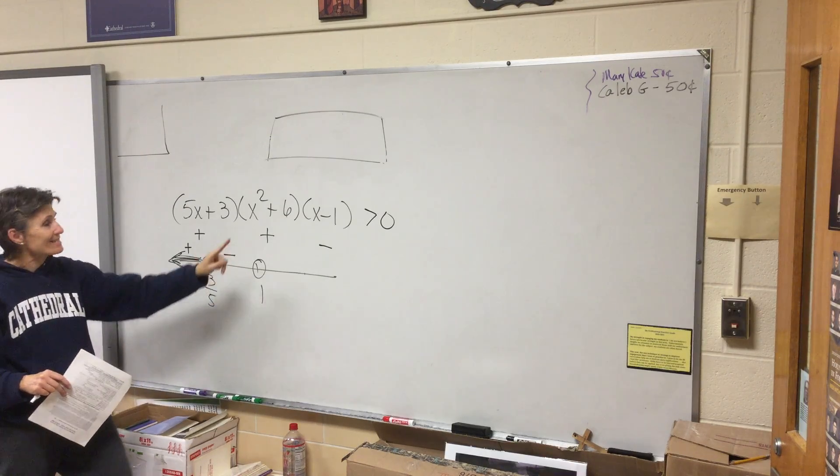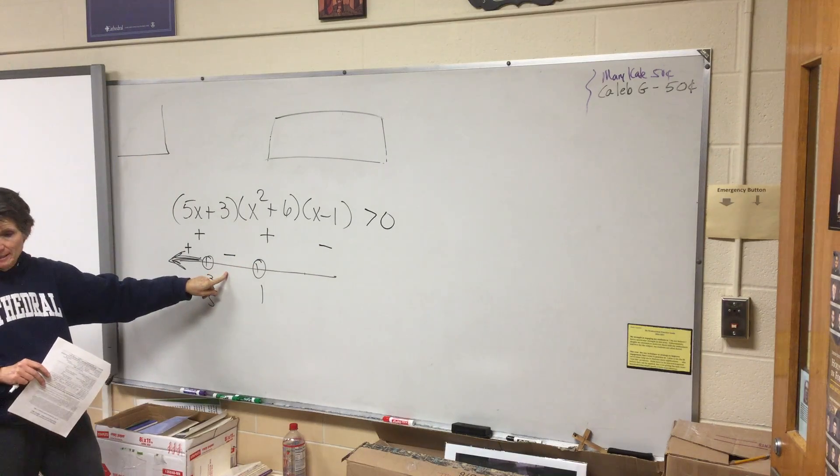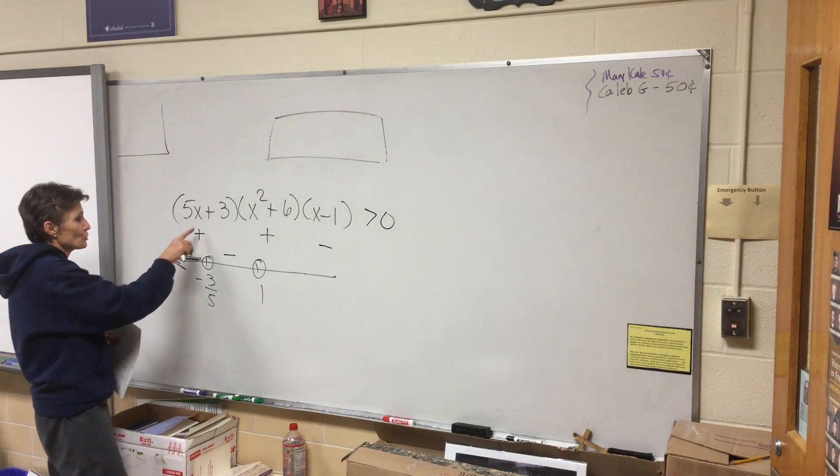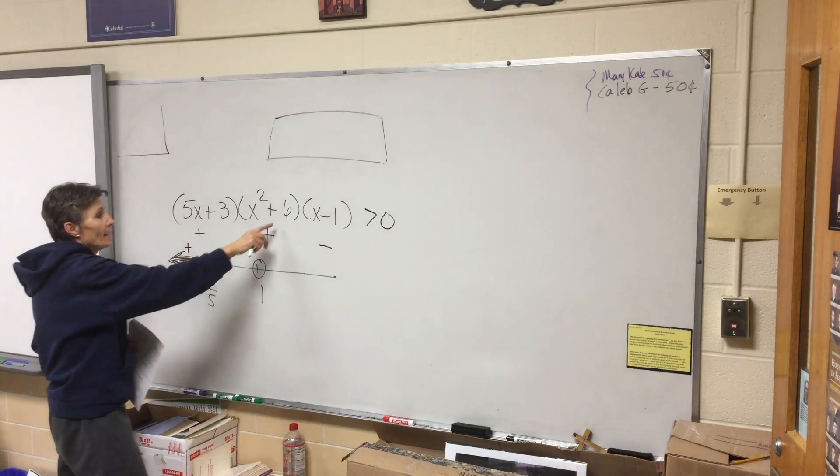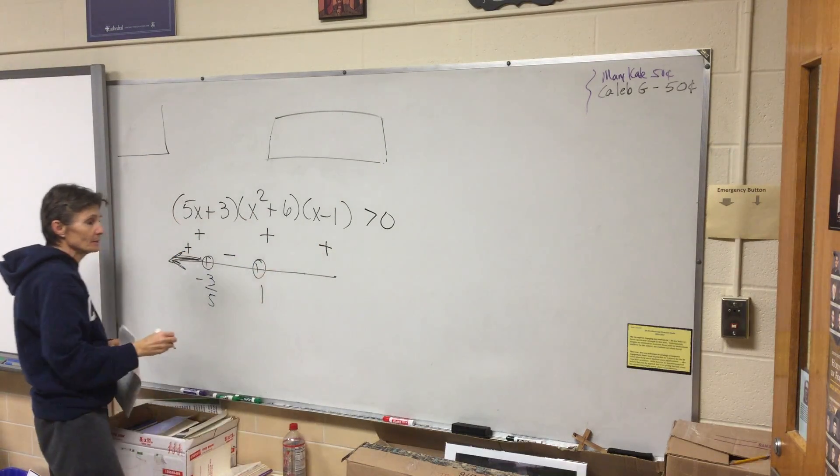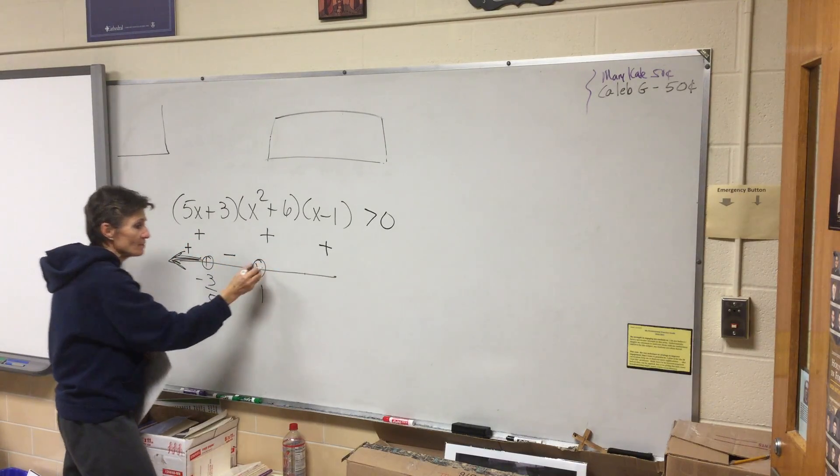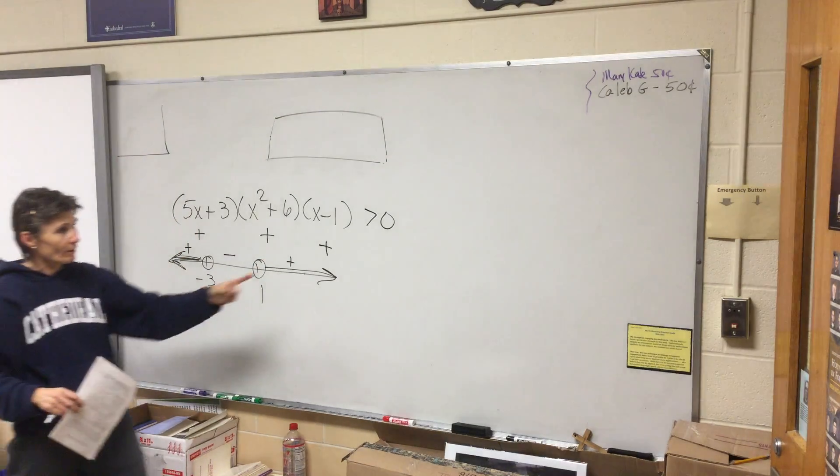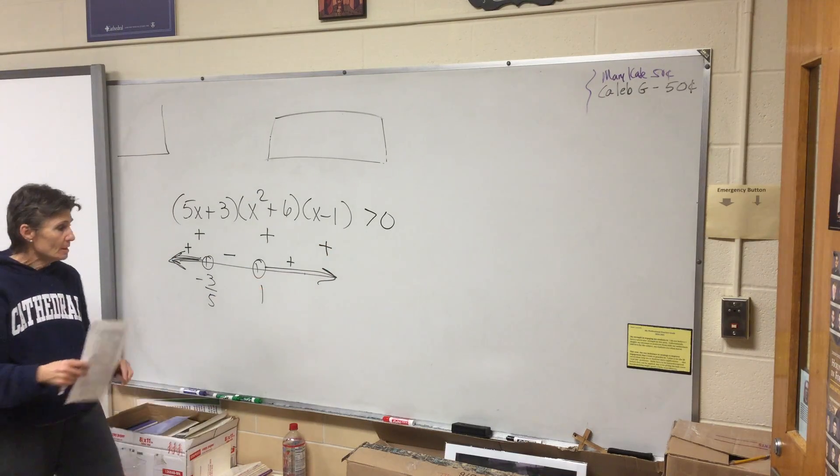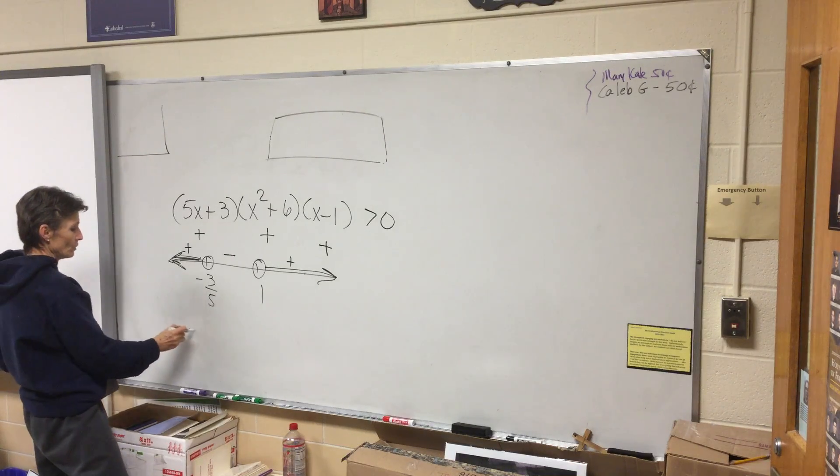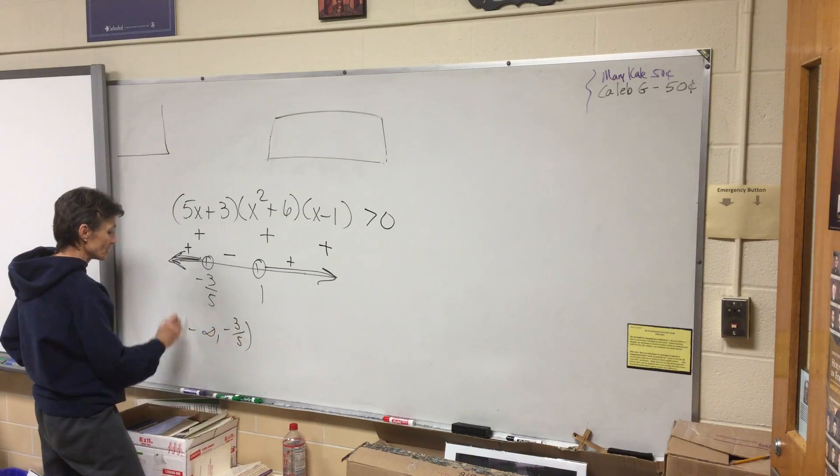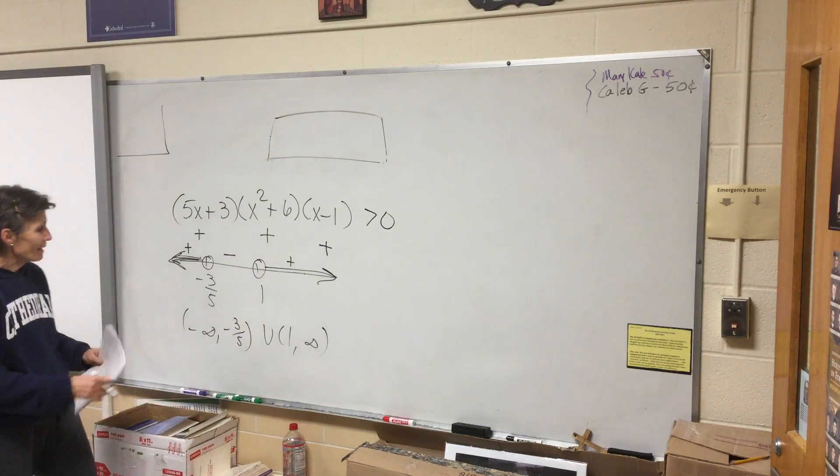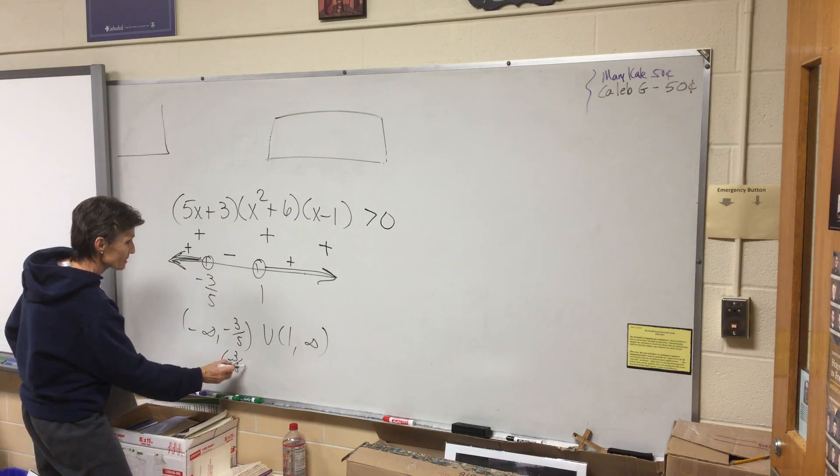If I put in zero, I'm going to get a positive parentheses, a positive parentheses, and a negative parentheses. If I multiply positive, positive, and negative, I get a negative. So this section is not positive, it is actually negative. So now I'll try two. Two gives me positive, positive, and positive. When I multiply all those positives, I get a positive.